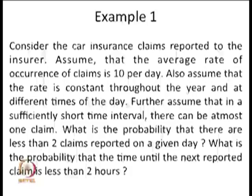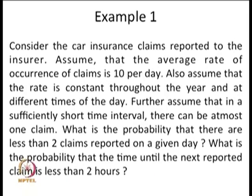Consider car insurance claims reported to an insurer — it need not be car insurance specifically, it could be any motor vehicle insurance. Assume that the average rate of occurrence of claims is 10 per day, and that this rate is constant throughout the year and at different times of the day. Even though this is an average quantity, there is a possibility that some day no claim is reported at all, or some day 30 or 40 claims are reported.